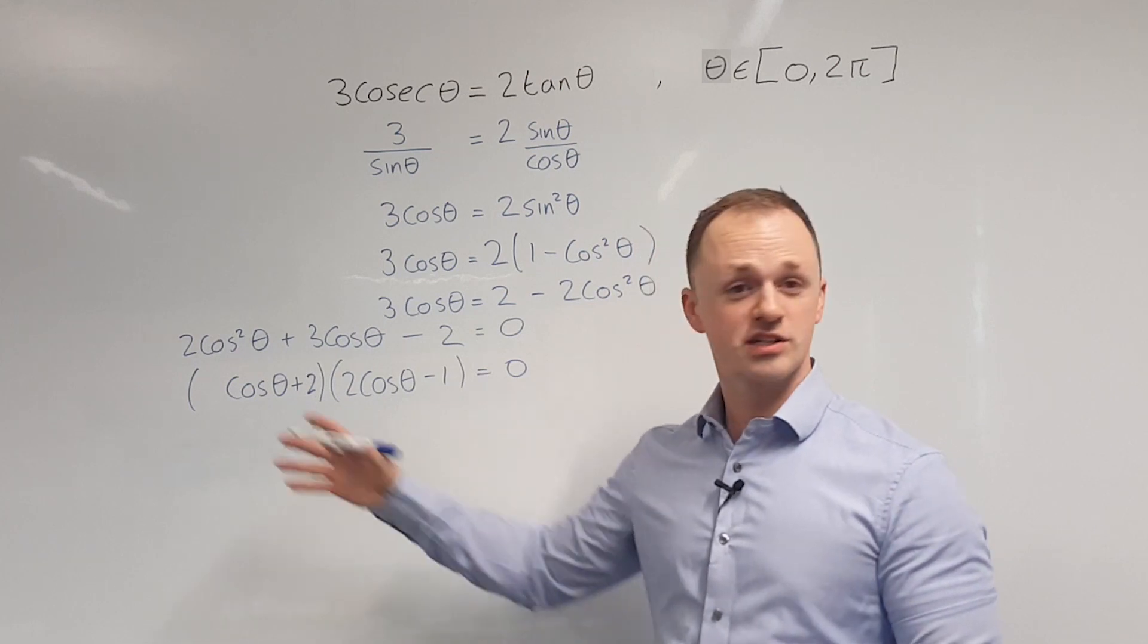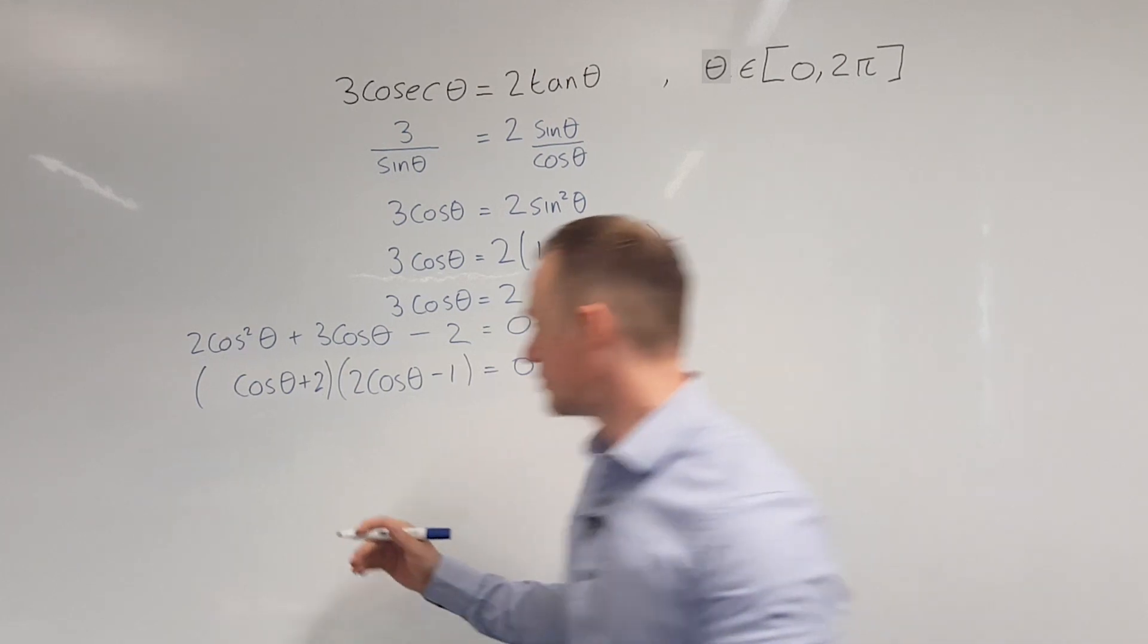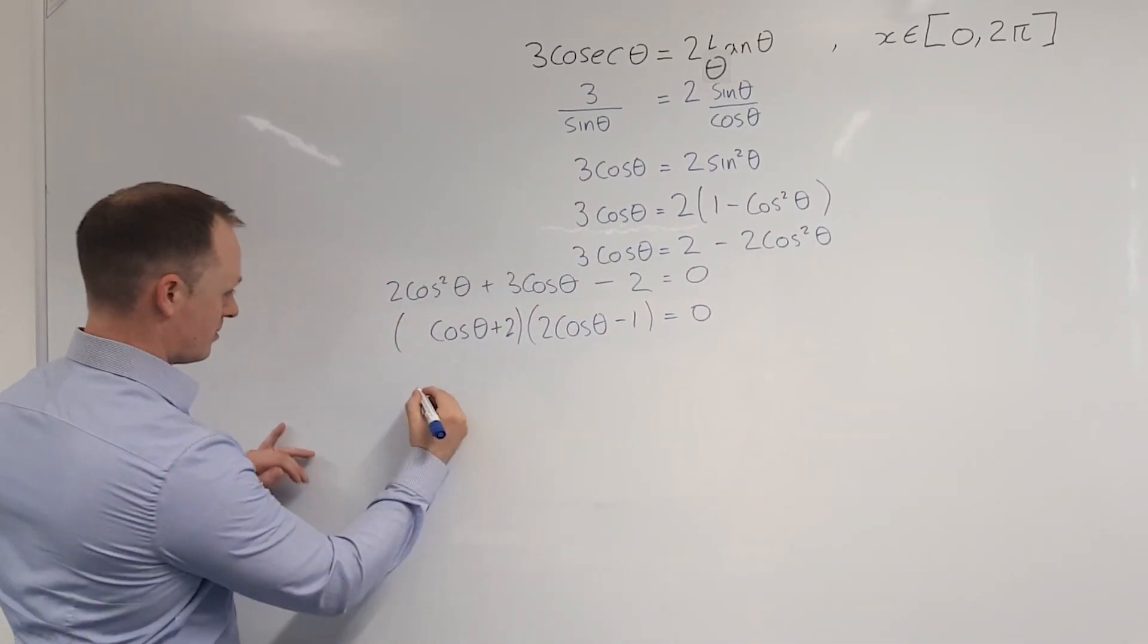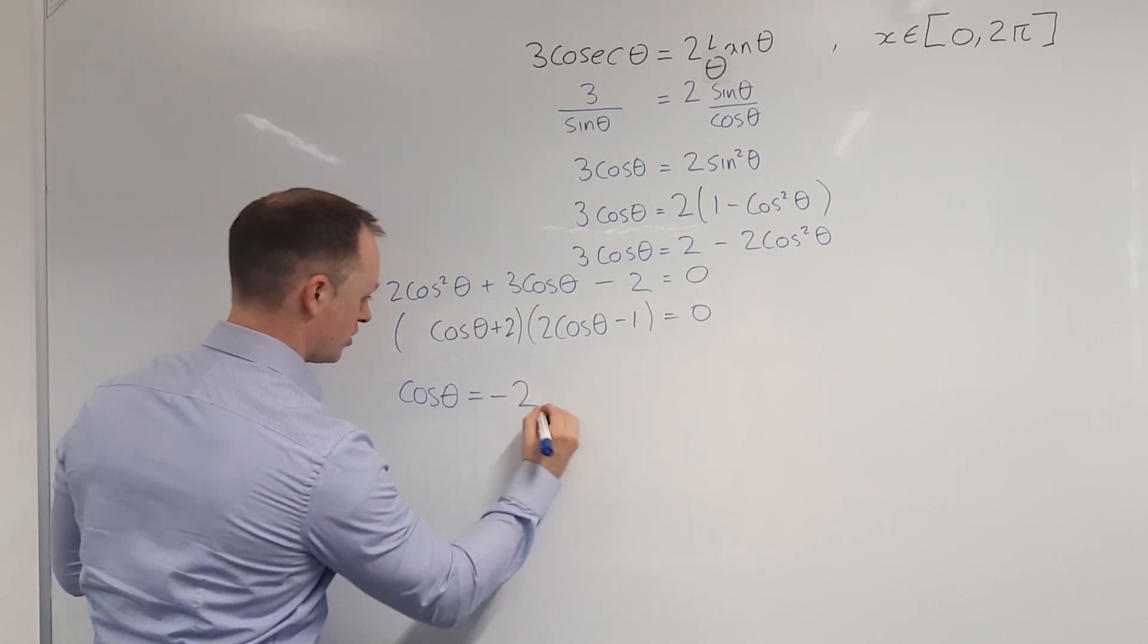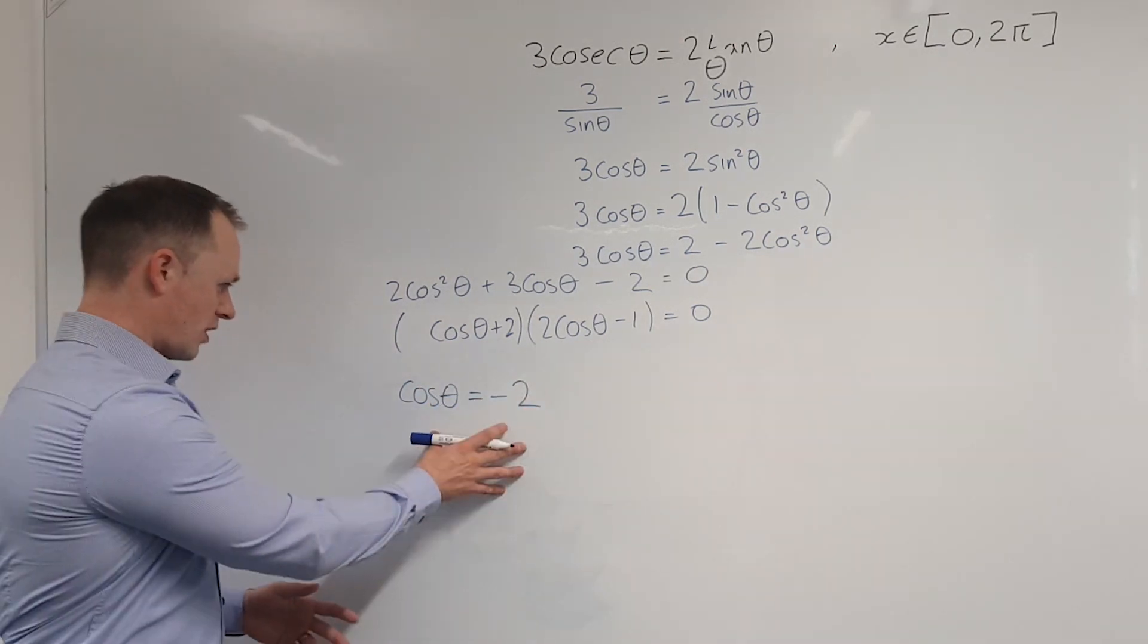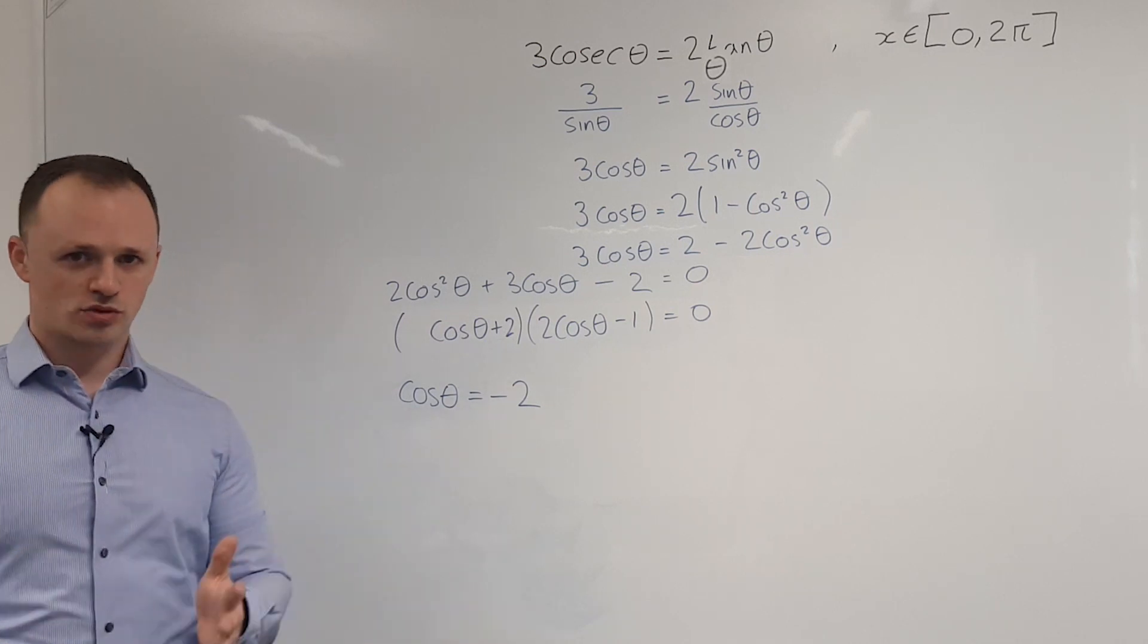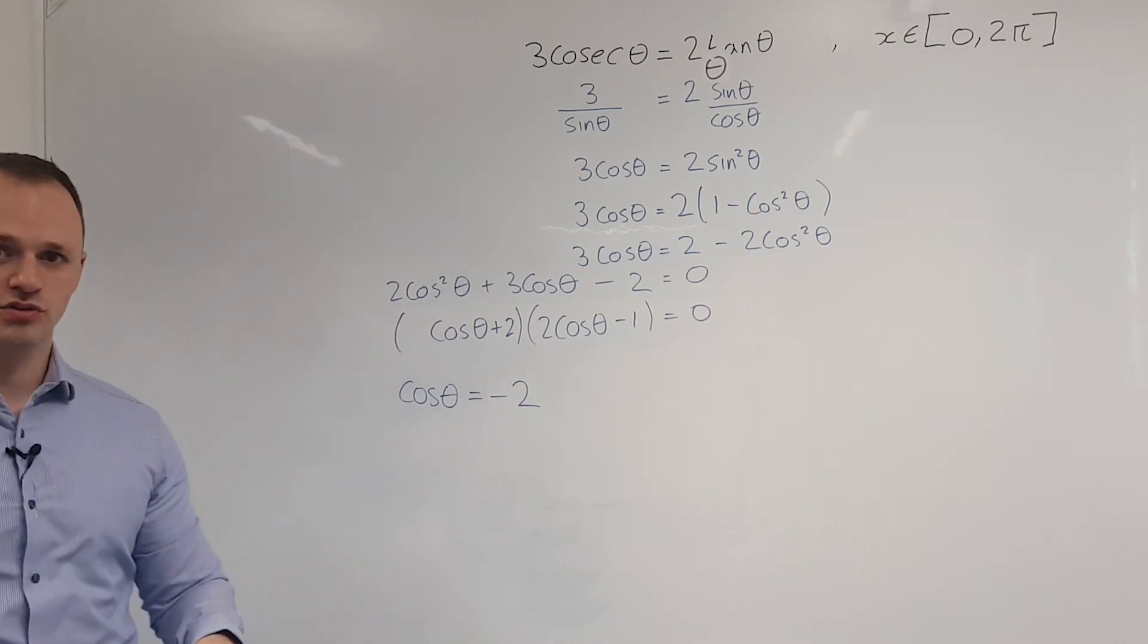Now that I've got it factorised, I can split it into two equations to solve. I'm going to start with this one here. I'm going to write cos theta equals negative 2. So the range of cos theta is minus 1 to 1, so this equation here has no solution.